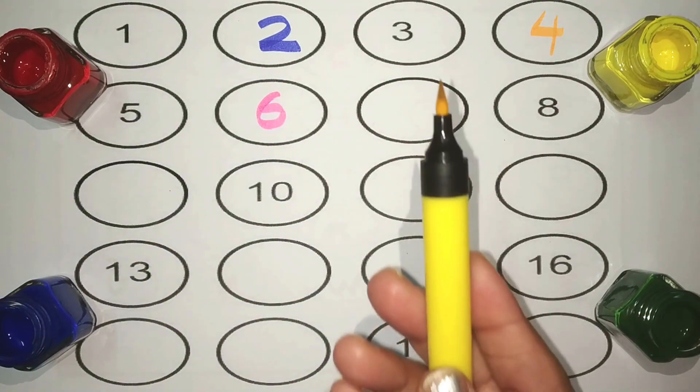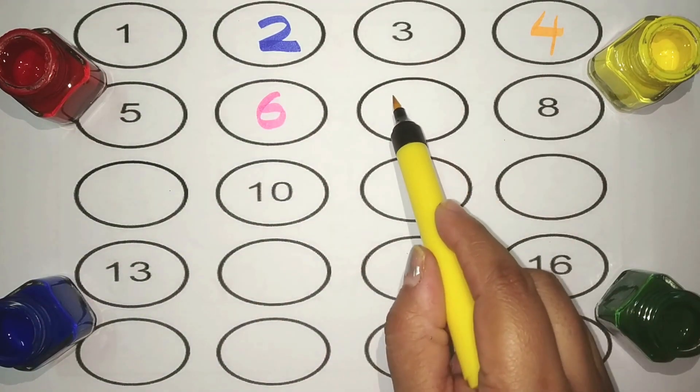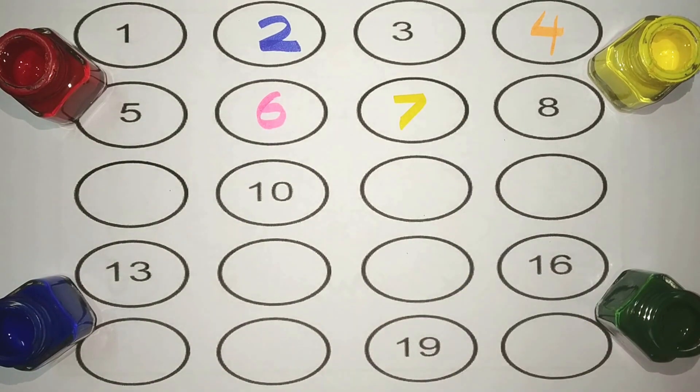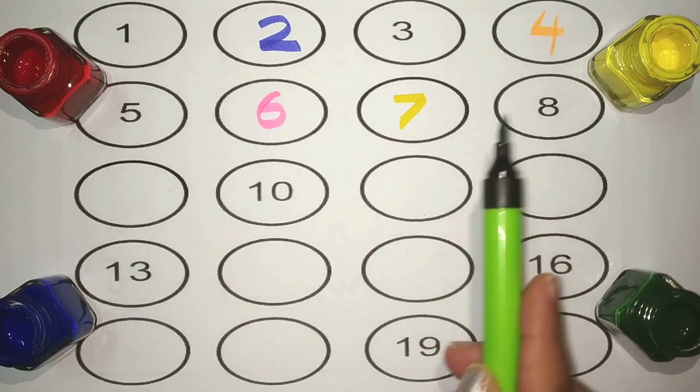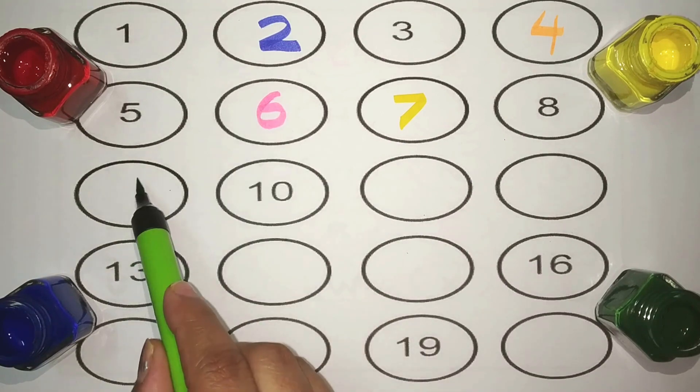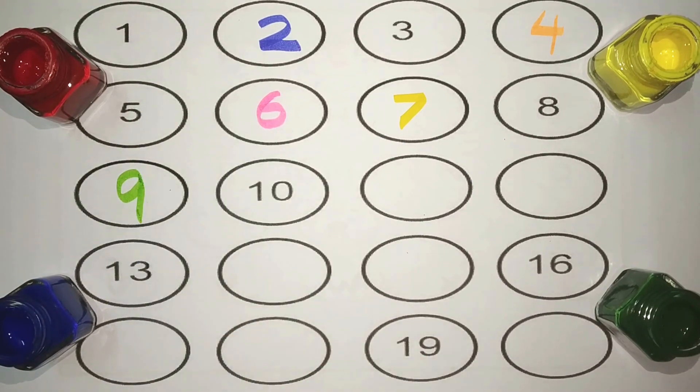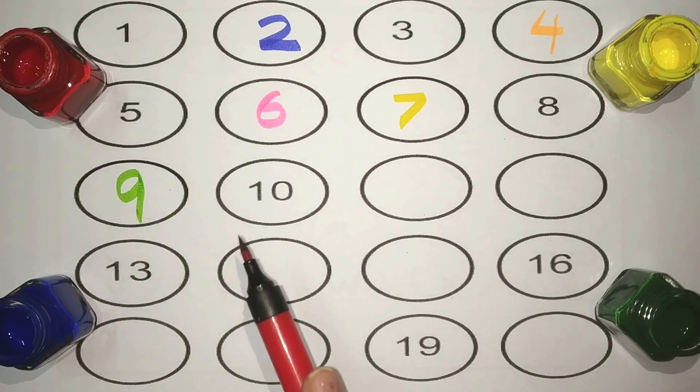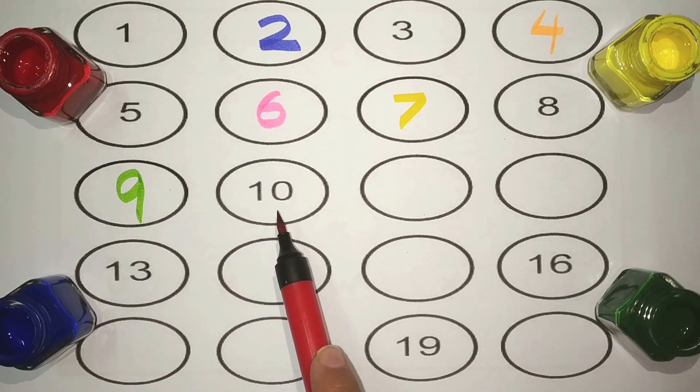Yellow: seven, eight. Green: nine. One, zero, ten.